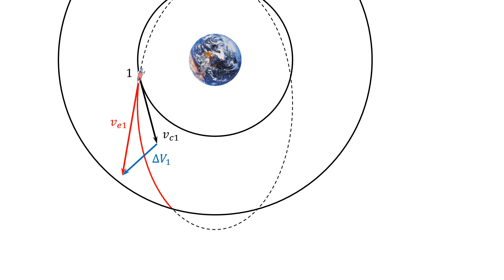And at point 2, delta V2 is the difference between the final circular orbital velocity, Vc sub 2, and the orbital velocity of point 2 of the transfer ellipse, Ve sub 2.